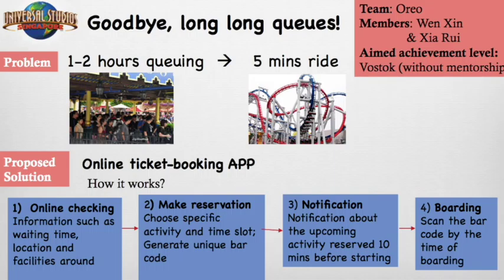Therefore, we intend to design an online ticket booking application which can save the time of queuing up physically. It starts with online checking which provides information of location and waiting time at each activity. After people choose the activity and the time slot that they wish to attend, a unique barcode will be generated once the reservation is successful. Ten minutes before the activity starts, there will be a notification message to remind users to be around the location.